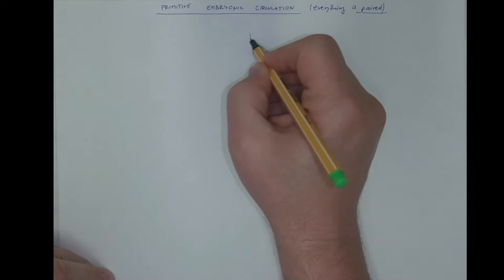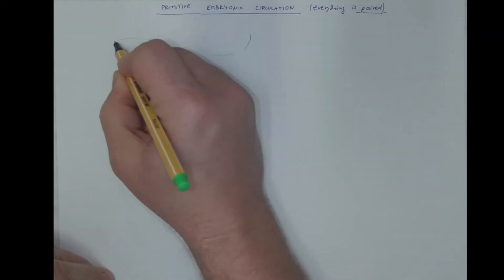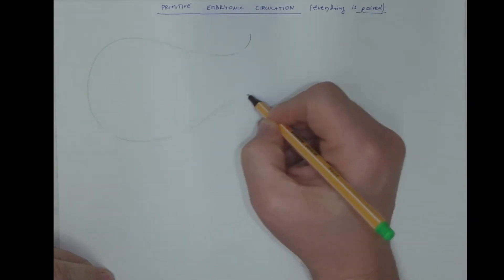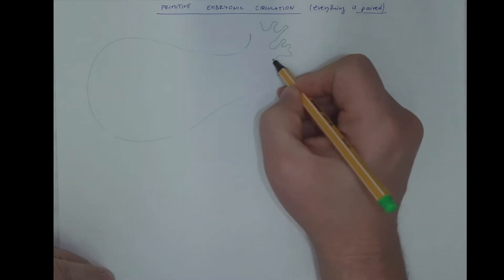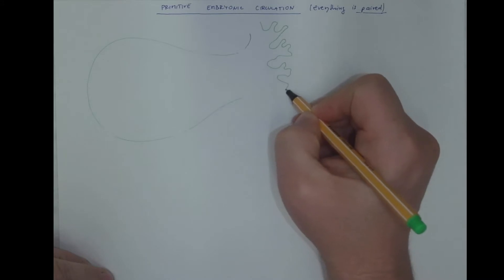So let's draw the extra embryonic mesenchyma, the connecting stalk, the chorionic villi of the embryonic component of placenta.